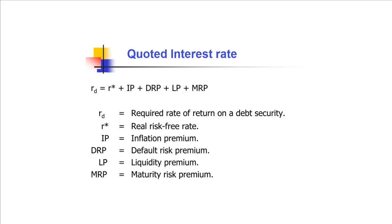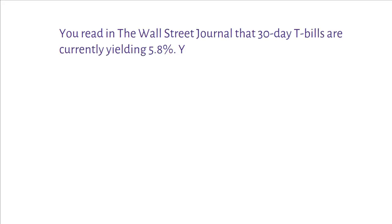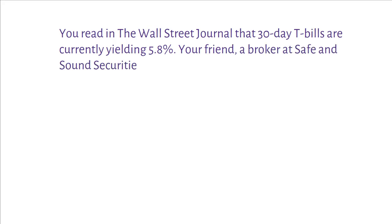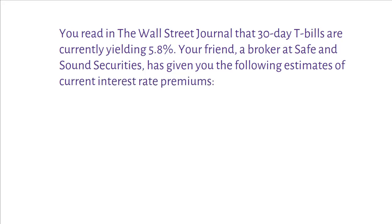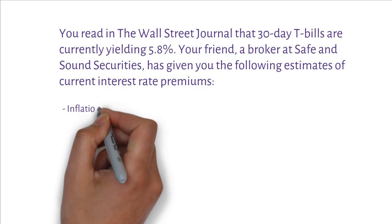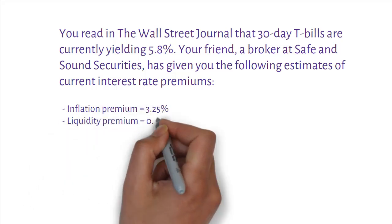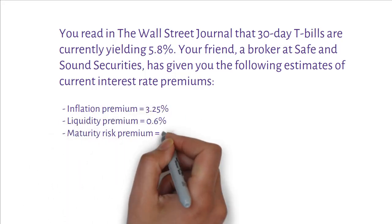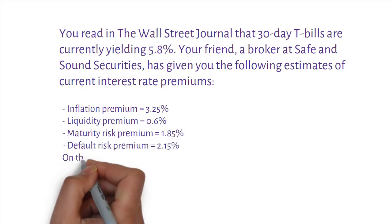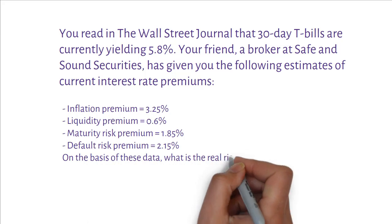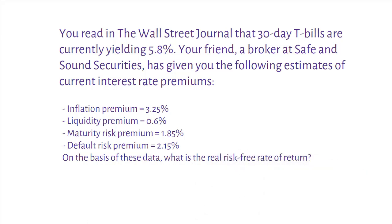To give you an idea of how the real risk-free rate is measured, we can solve a simple numeric example. You read in the Wall Street Journal that 30-day T-bills are currently yielding 5.8%. Your friend, a broker at Safe and Sound Securities, has given you the following estimates of current interest rate premiums: inflation premium equals 3.25%, liquidity premium equals 0.6%, maturity risk premium equals 1.85%, default risk premium equals 2.15%. On the basis of this data, what is the real risk-free rate of return?